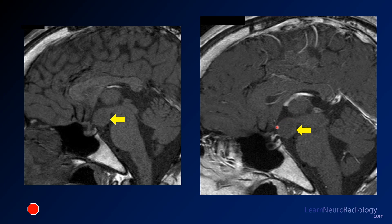Here's your clue that this is a post-contrast image: you can see the nasal mucosa is really lighting up, in addition to all the intracranial vessels — although that can be a little deceiving because some veins are bright on pre-contrast too. But you'll see this mass in the hypothalamus isn't really enhancing at all.